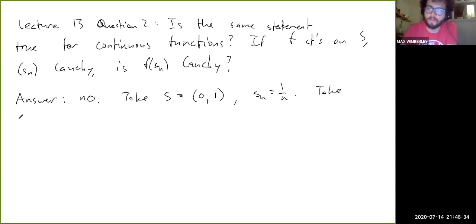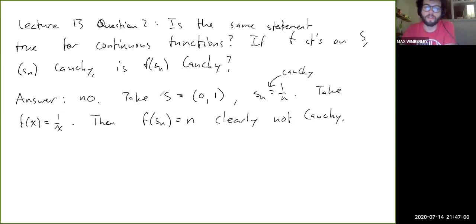So, we could take F of X equals, like, 1 over X, right? Then, F of SN is N. This is clearly not Cauchy, right? This is Cauchy. Over here, pretty clearly, but F of SN is not. So, mere continuity, if you're looking at an arbitrary set S, the mere condition of continuity is just not nearly enough to guarantee that F will carry a Cauchy sequence to another Cauchy sequence, okay?